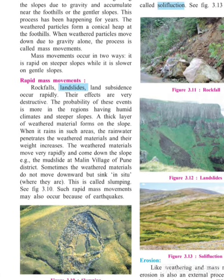Mass wasting is also part of the exogenetic process. The weathered rock materials start moving alongside the slopes due to gravity and accumulate near the foothills. Many rocks gather together and go down near the gentler slope at the foothills. Once collected there, the weathered particles start moving around, and slowly with the help of other weathering processes these rocks are transformed into smaller rocks. This process happens to all rocks at the same time, and that's why it is known as mass movements.